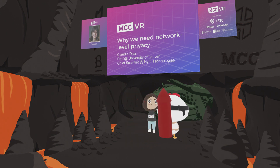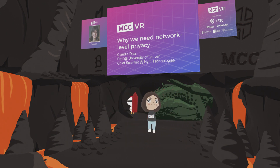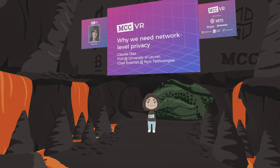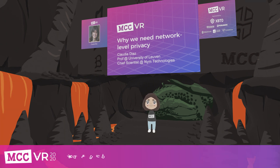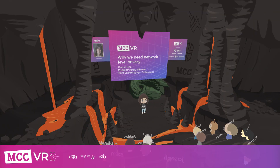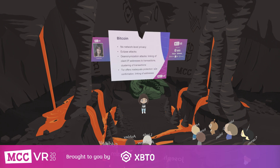This talk addresses why we need network-level privacy. The short answer is that if you do not have network-level privacy, the network traffic metadata will act as a side channel that undermines the security and privacy of your application. This has been well documented in the case of cryptocurrencies.